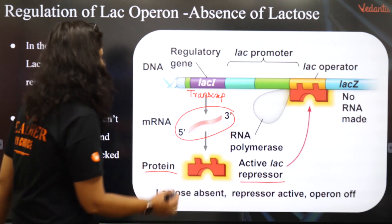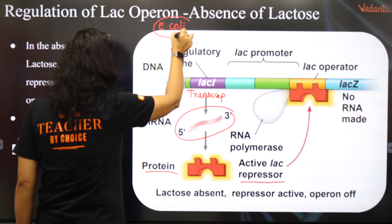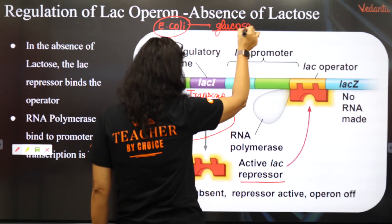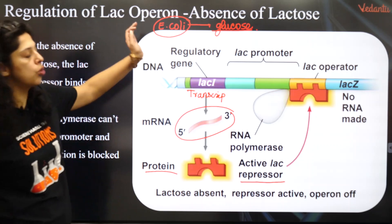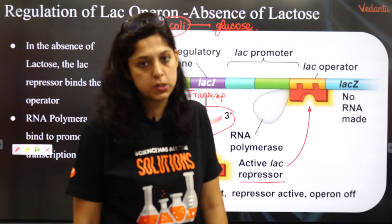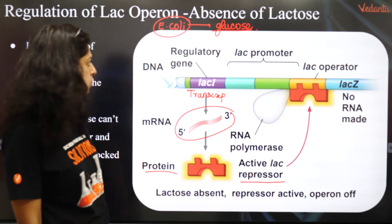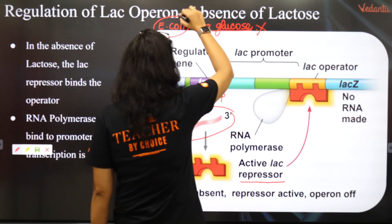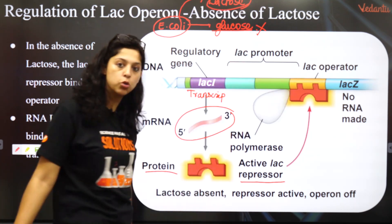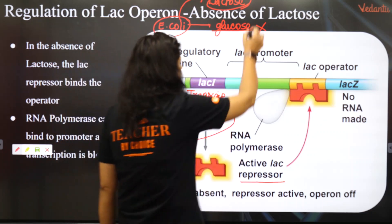Repressor means to stop. E. coli prefers glucose as food. If it is getting glucose directly, it will not take lactose. Only when glucose is absent will it say, 'I will take lactose, I need lactose,' because it will make glucose from lactose.